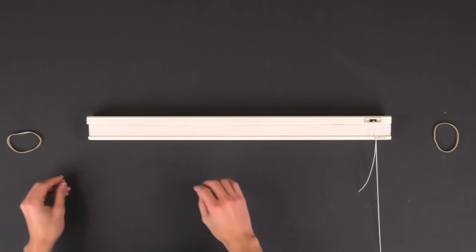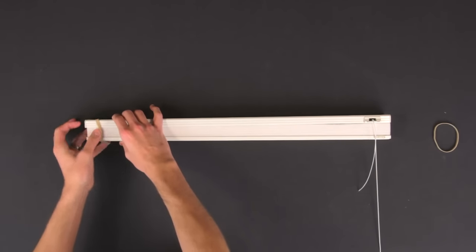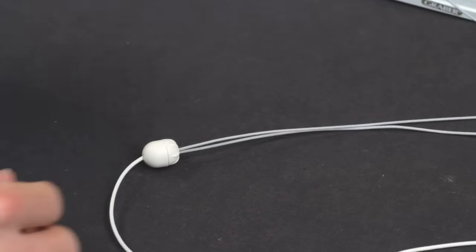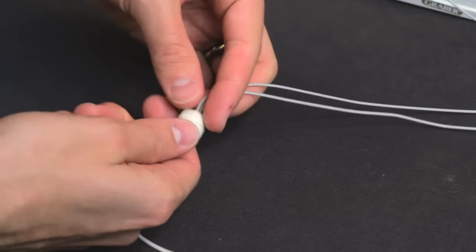Lay the shade on a flat surface. You may need to compress the shade with rubber bands. Remove the condensers and tassels and set them aside.